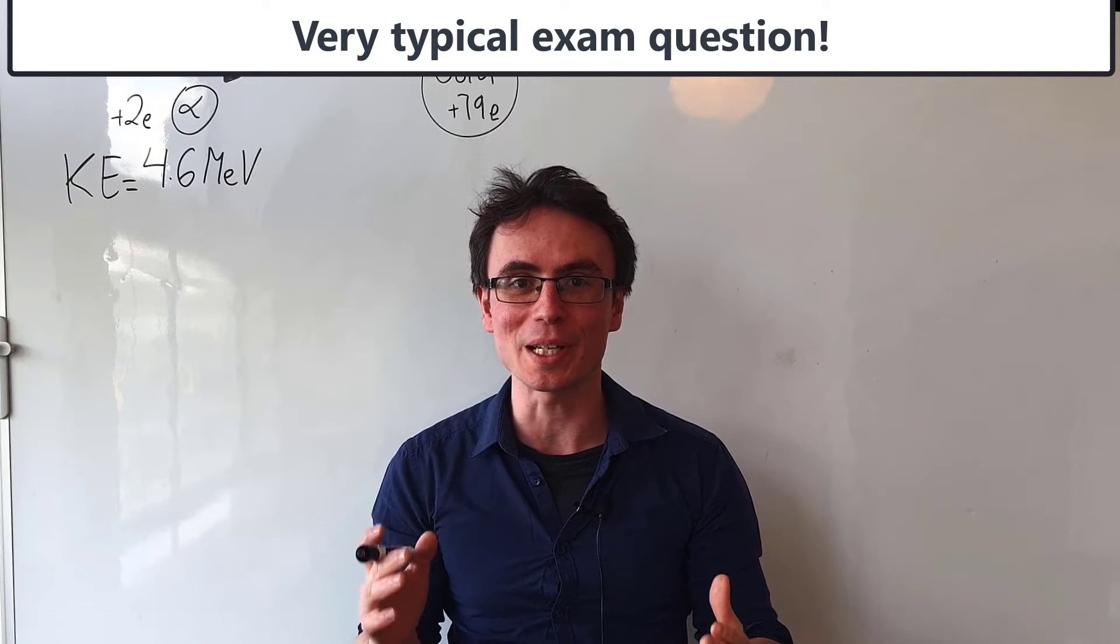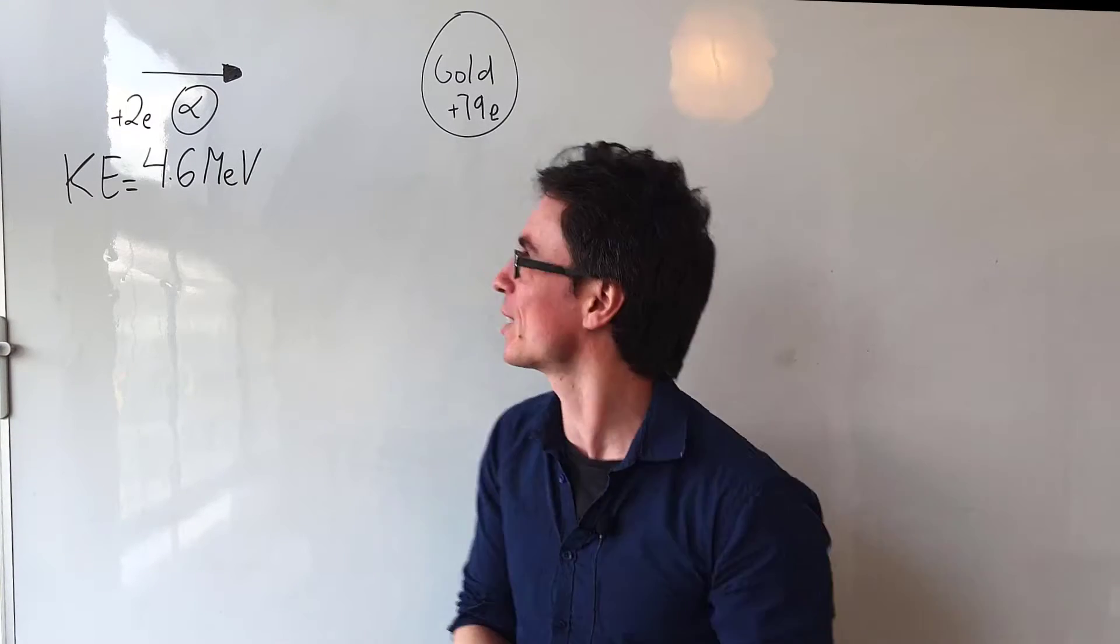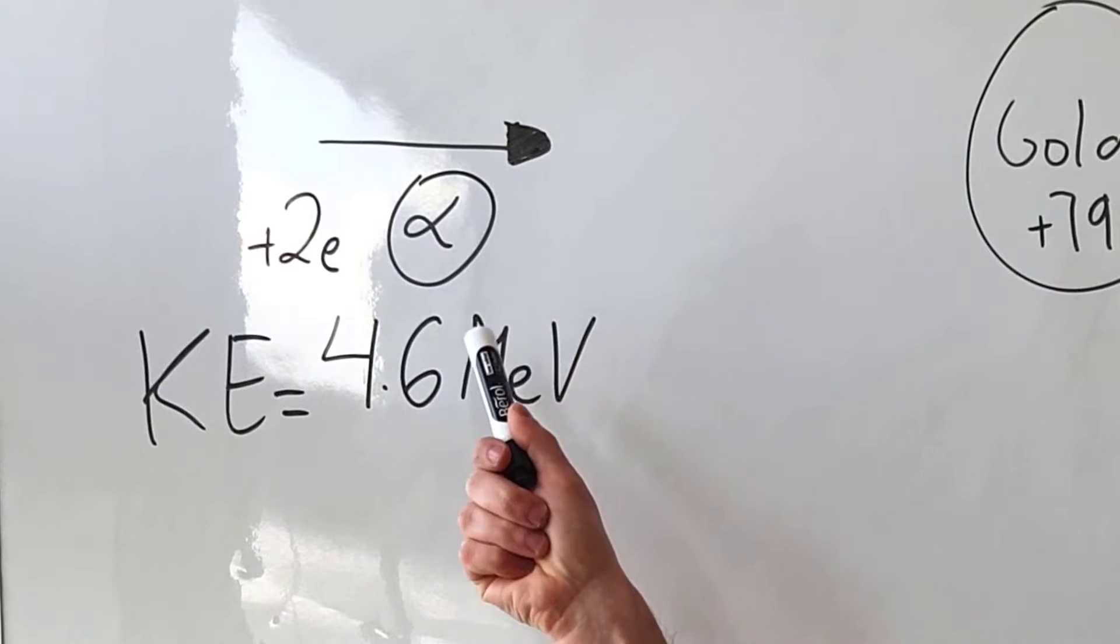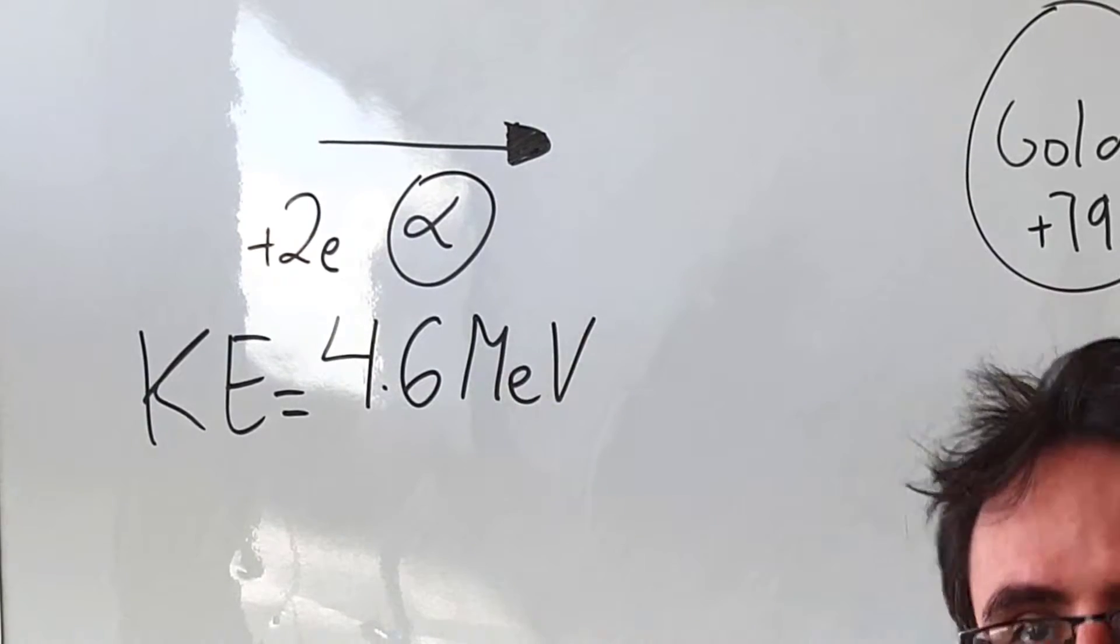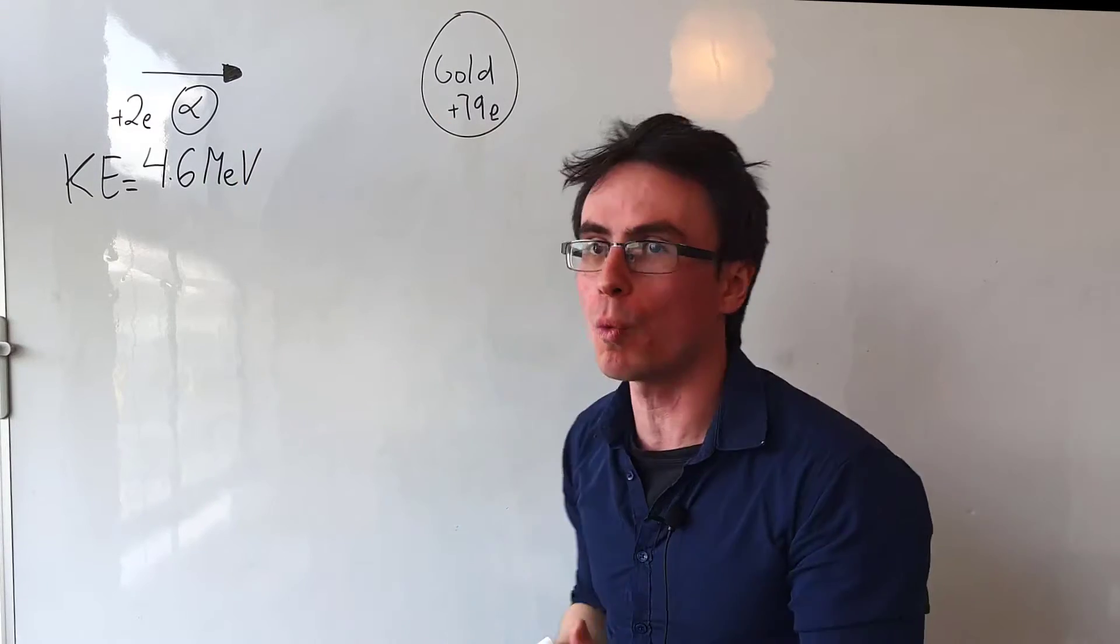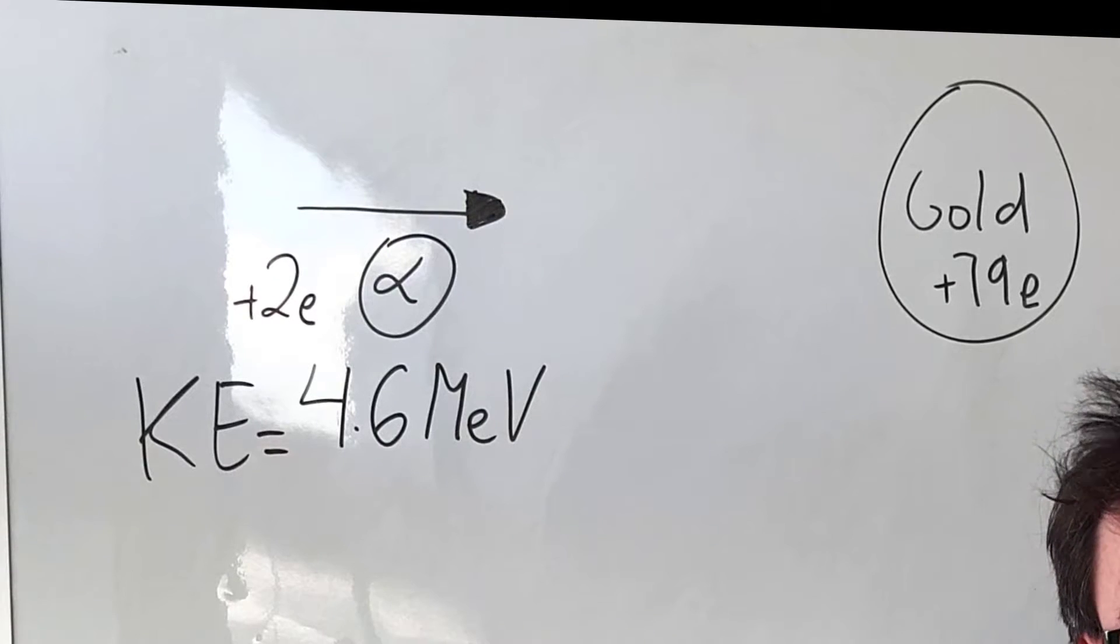We can approximate the size of the nucleus by looking at the following situation. We have this alpha particle of charge plus 2e traveling towards this gold nucleus, which is also positive, but with a charge of plus 79e.